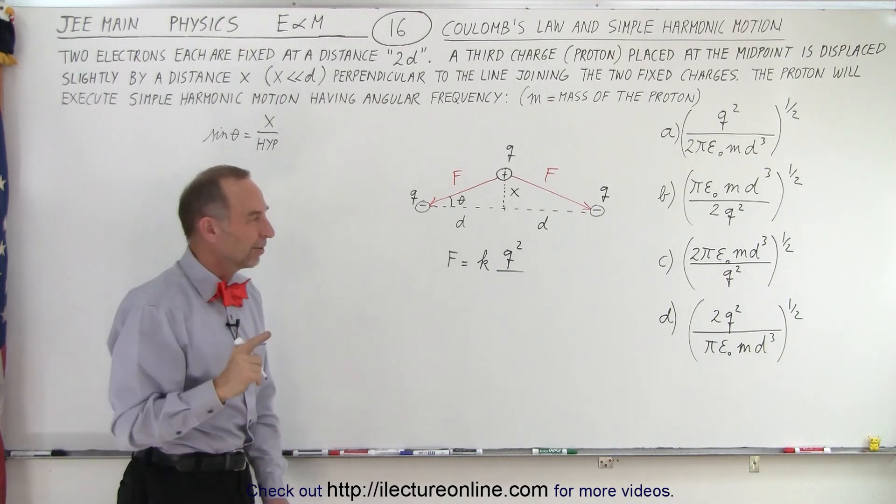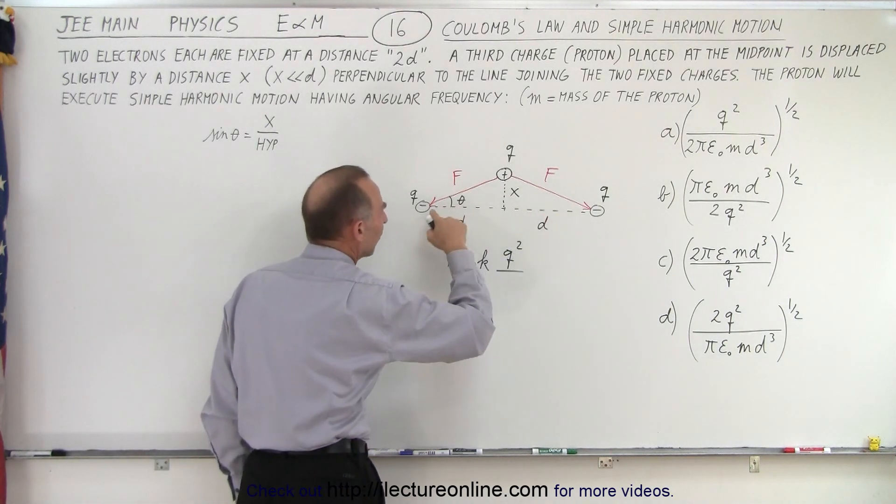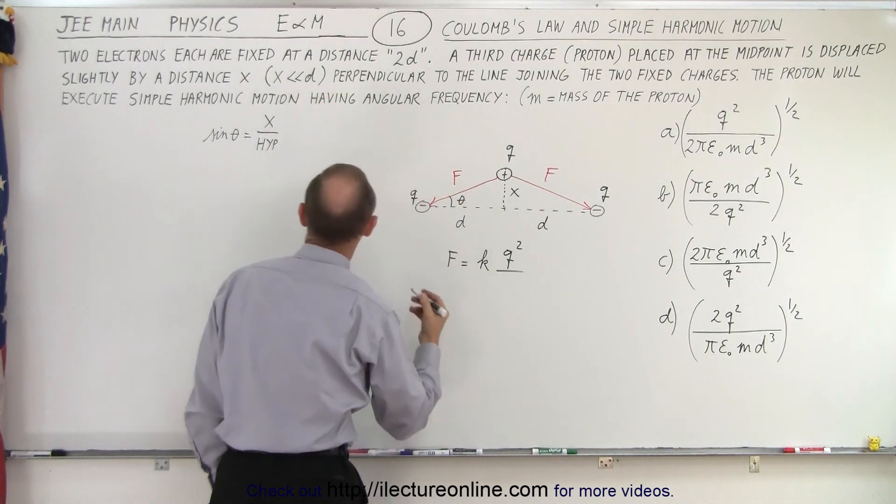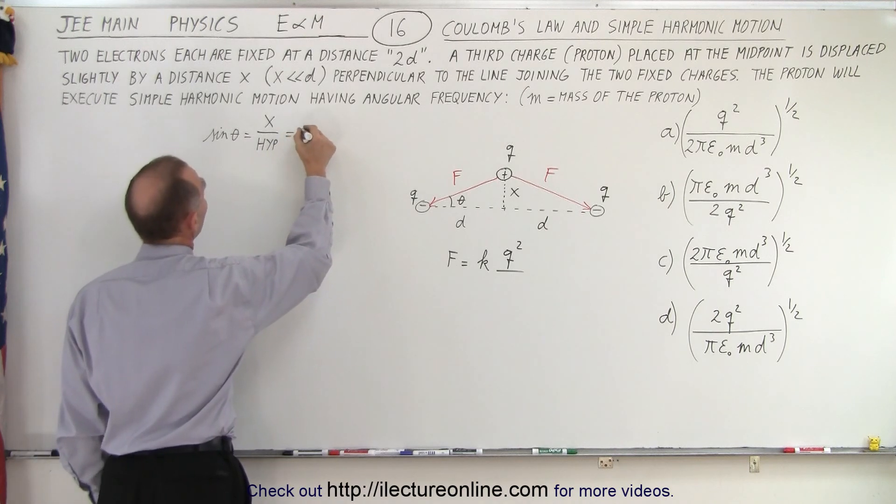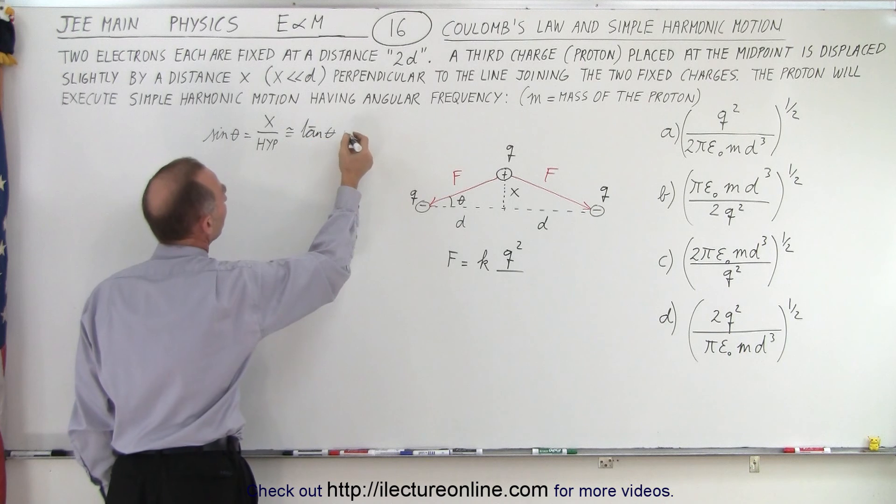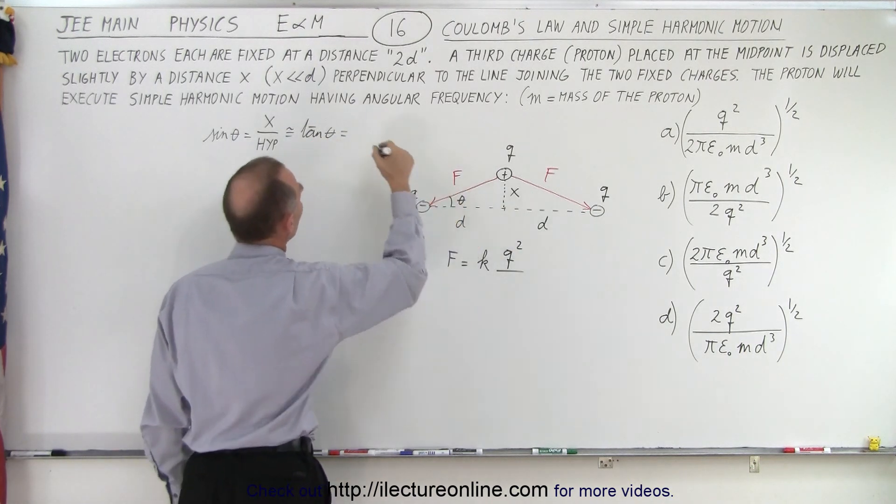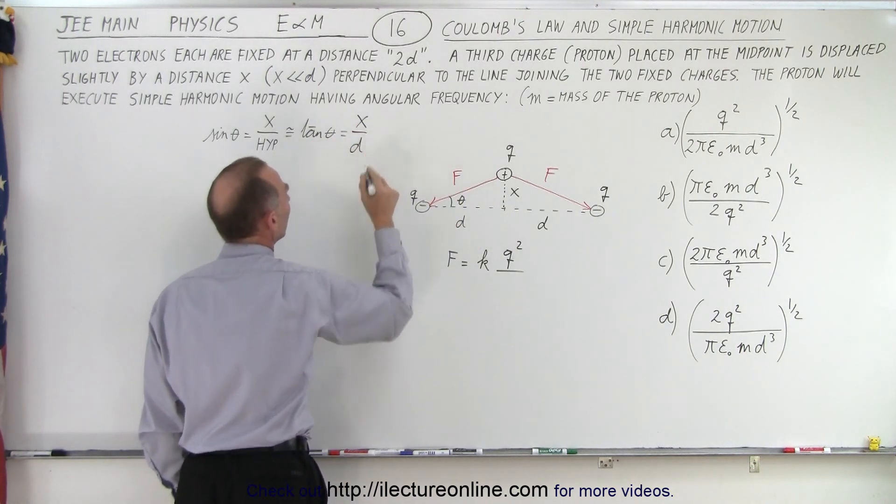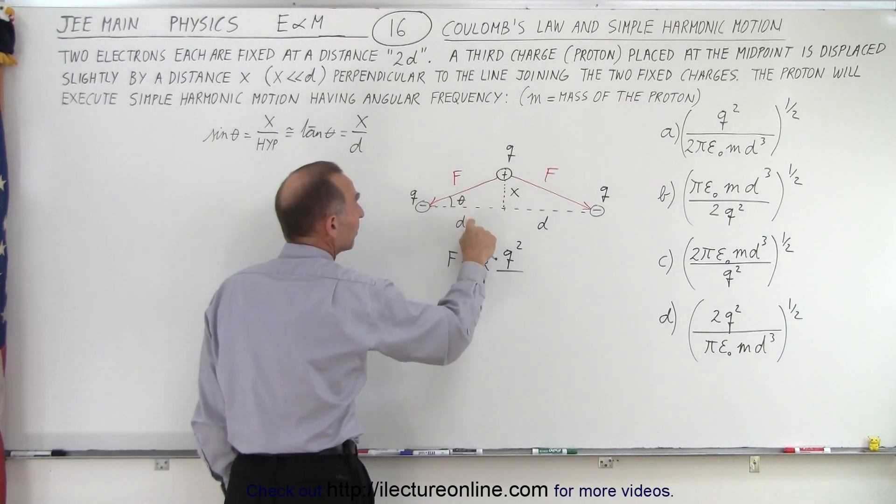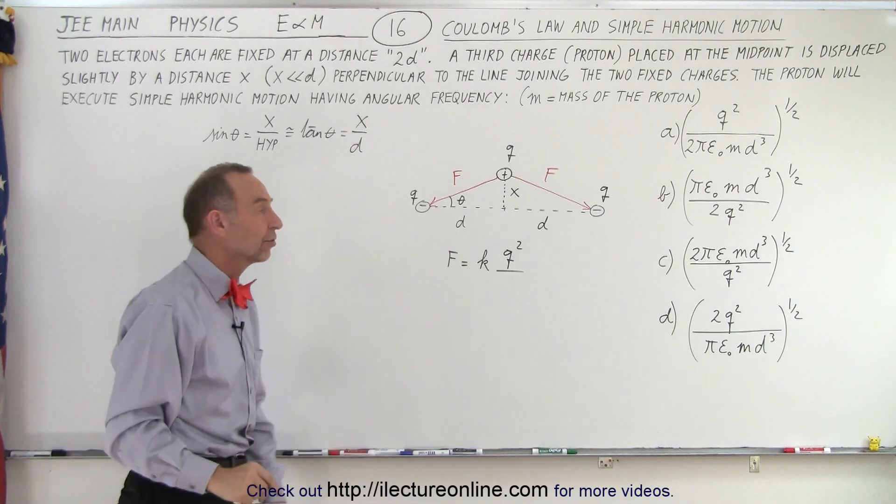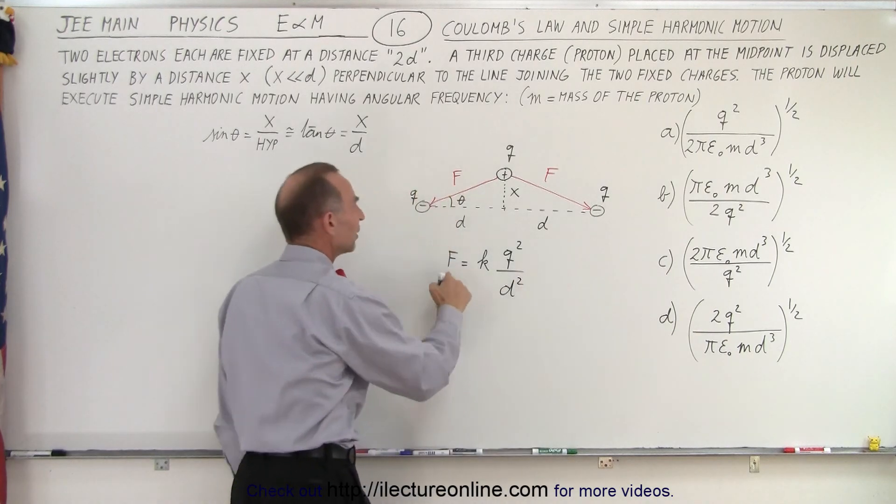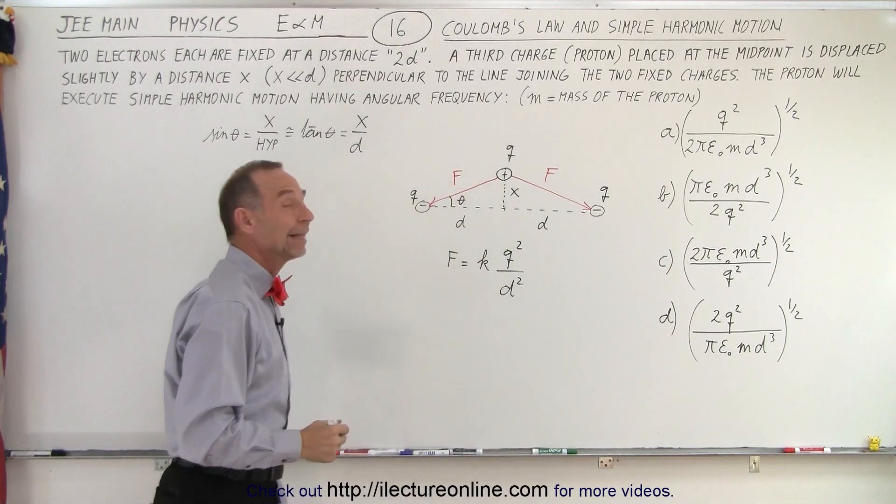But since the angles we're dealing with are very small, because X is much much smaller than D, at very small angles, we can say that the sine of theta would have to be approximately equal to the tangent of theta. And the tangent of theta, by definition, is equal to the opposite over the adjacent would be X over D. So if the angle is small enough, then the hypotenuse would essentially be the same length as D, and I think we can make that assumption. So if that's the case, it's the distance squared, and that would be the force of attraction in that direction.